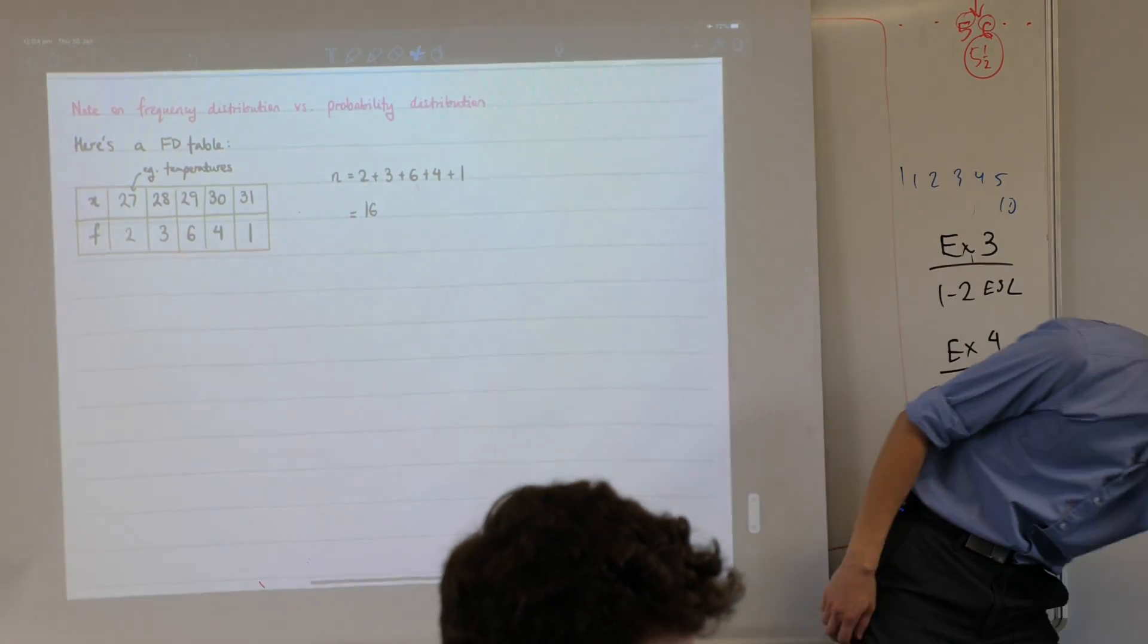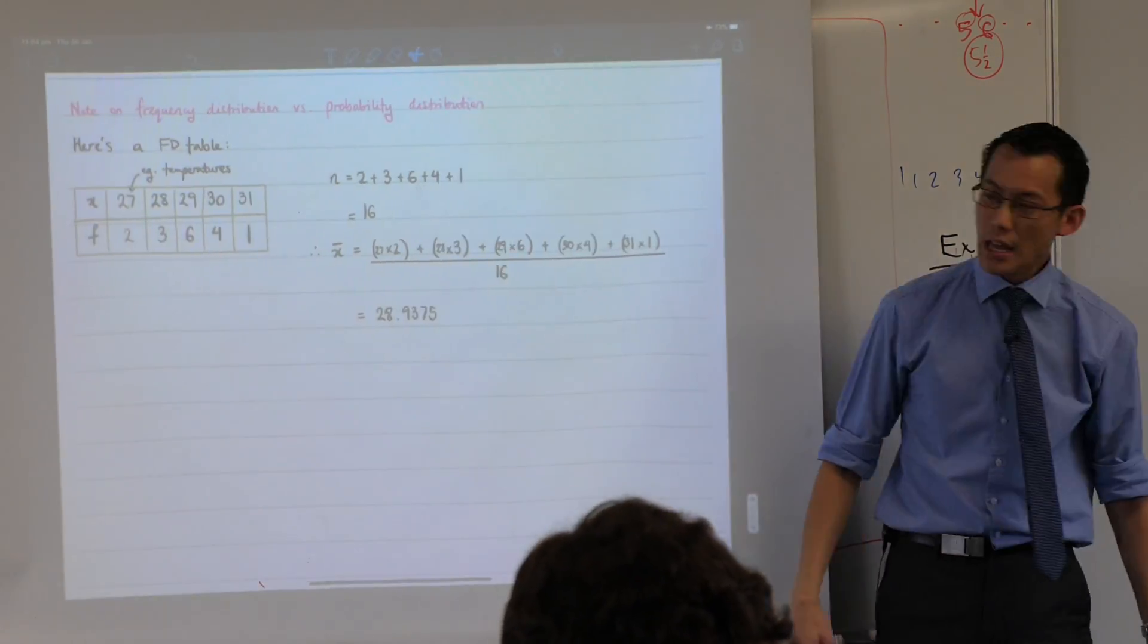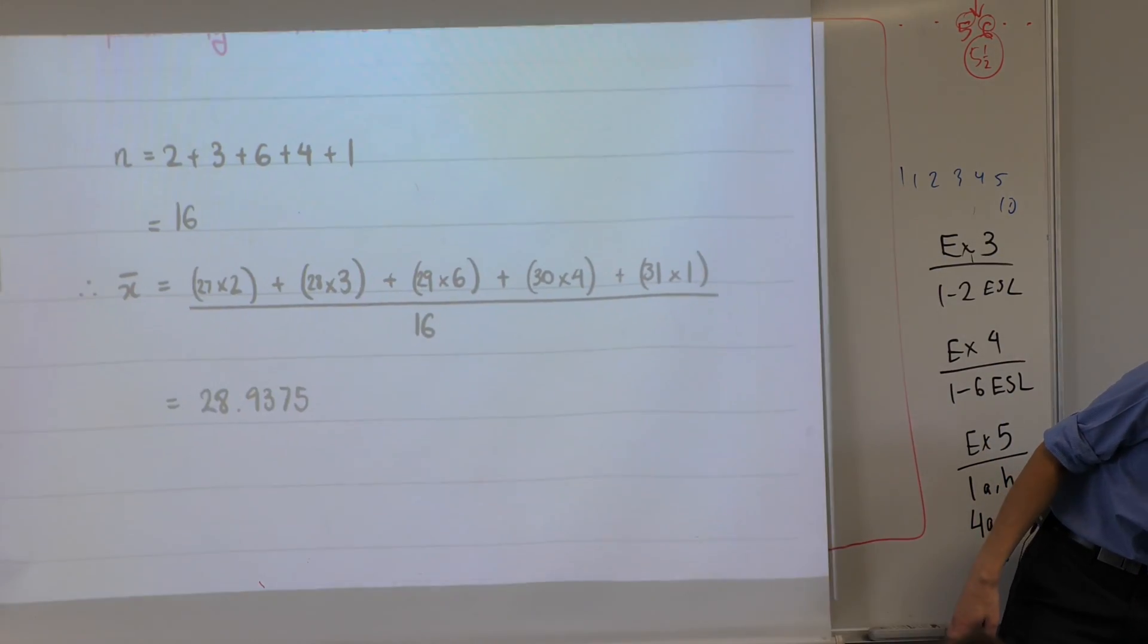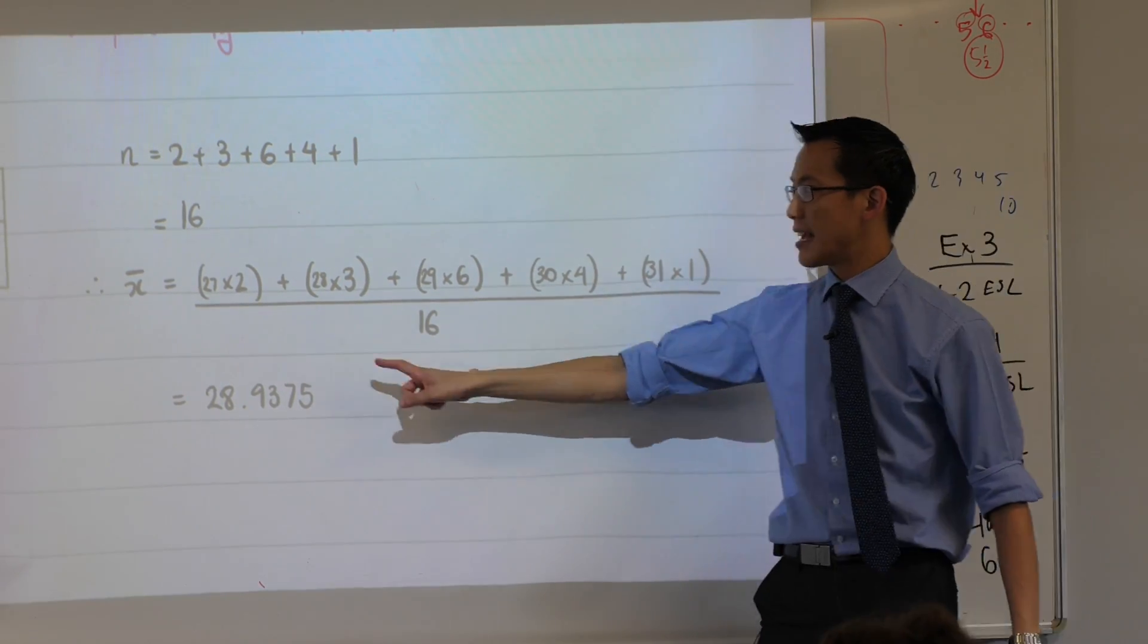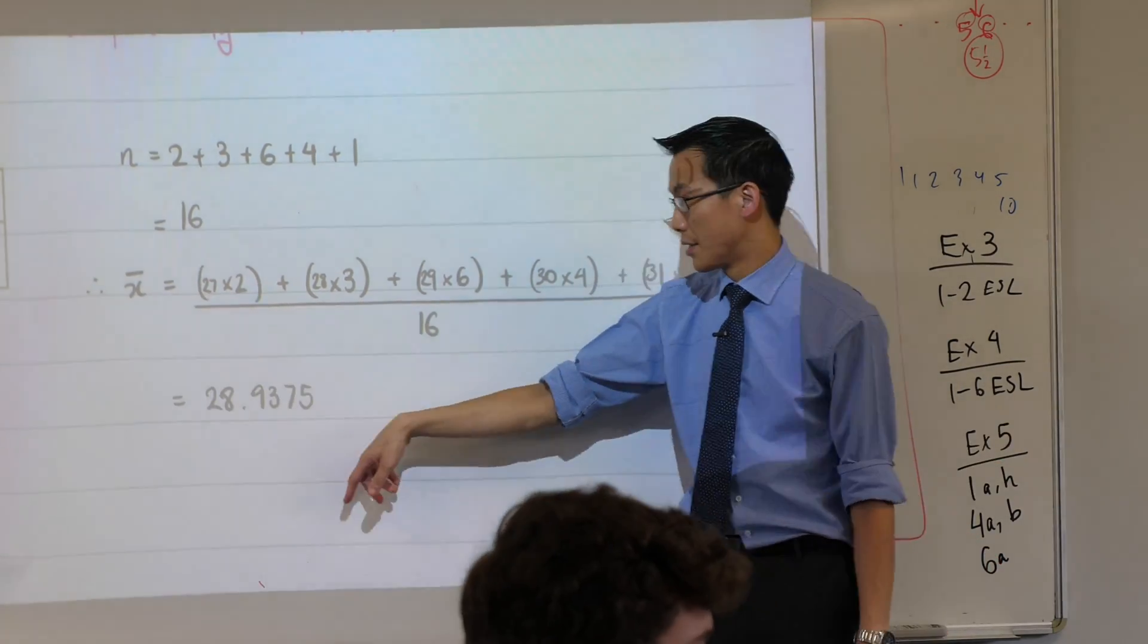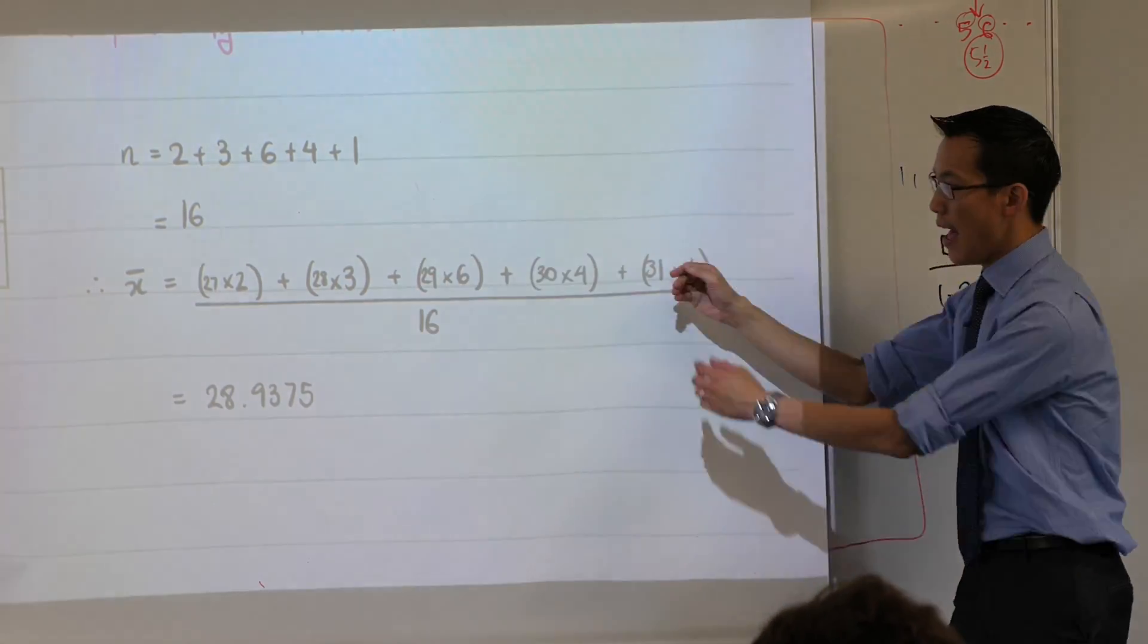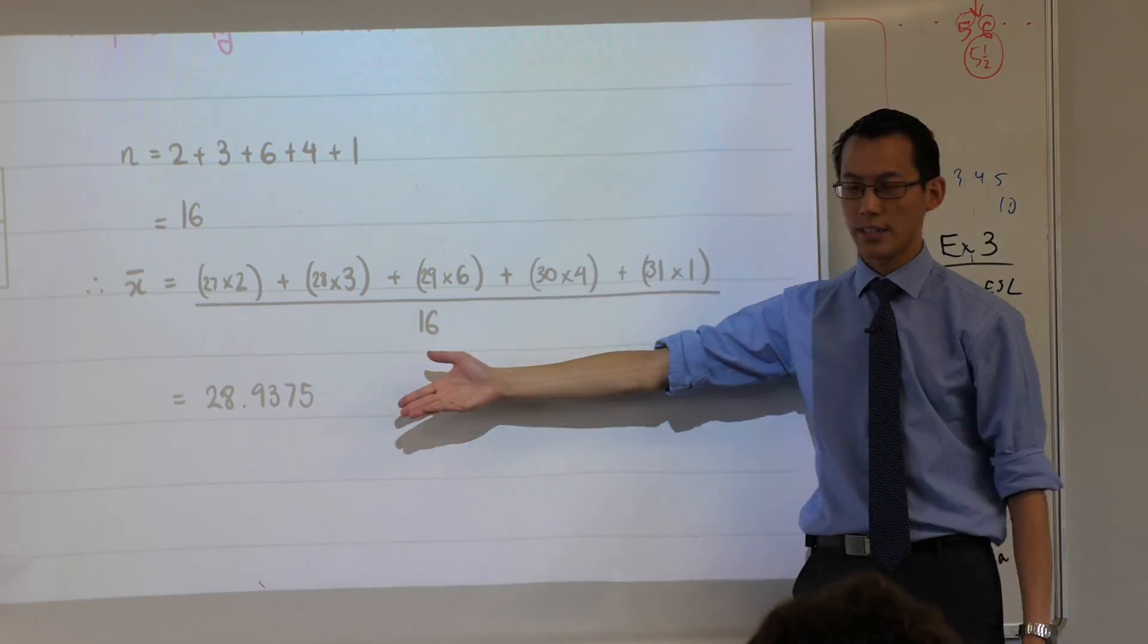And then after that and I want you to look carefully, this is how I would calculate the mean for this set of data. I say there are two days that had 27 degrees, there are three days that had 28, six that had 29 degrees and so on, add it all up, divide by 16, you get a mean.